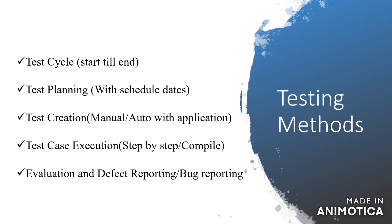Test planning with scheduled dates — approximate dates must be scheduled in the test planner. Test creation: whether that test will be created manually or automated with the help of any application. Test case execution: step-by-step or in a compiled way. Whether the test case has been produced by a supervisor, the quality testing manager, or by a leading person. Execution and defect reporting.